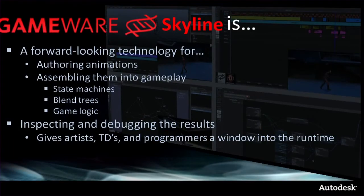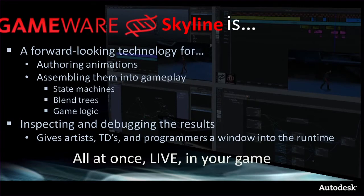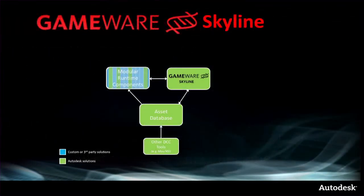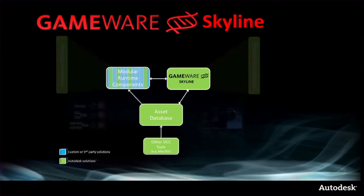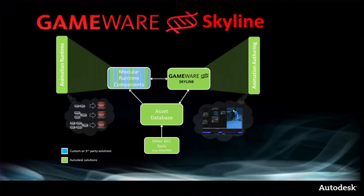Project Skyline is a forward-looking technology for authoring animations, assembling them into gameplay with state machines, blend trees, and game logic. You can inspect and debug the results by giving artists, TDs, and programmers a window into your game runtime — all happening live in your engine while it's running. Project Skyline has two components: an animation runtime and an authoring component.